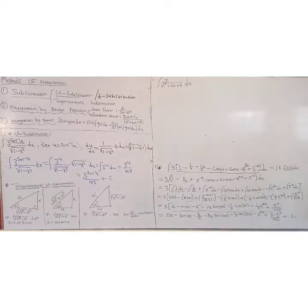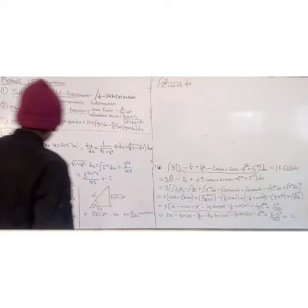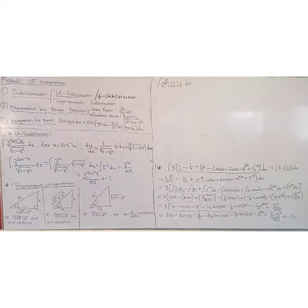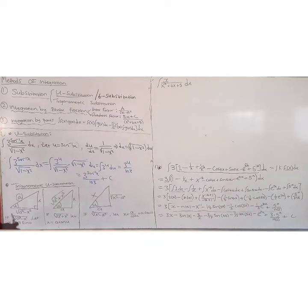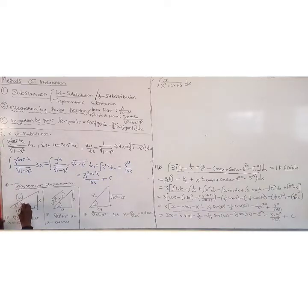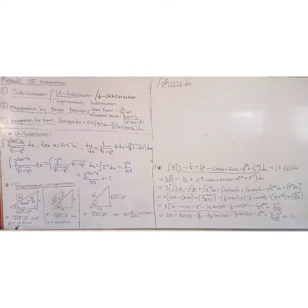Let's consider trigonometric substitution. These three triangles are very important. In the first triangle, a (a constant) is the hypotenuse, x is the opposite, and the square root of a squared minus x squared is the adjacent. So sin(u) equals x over a, which is why whenever we see the form involving a squared minus x squared, we let x equal a times sin(u).